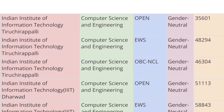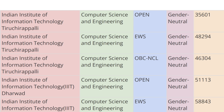Next we have IIIT Tiruchirappalli. For Open category the cutoff rank is 35,601, for EWS category the cutoff rank is 48,294, and for OBC-CL the cutoff rank is 46,304.